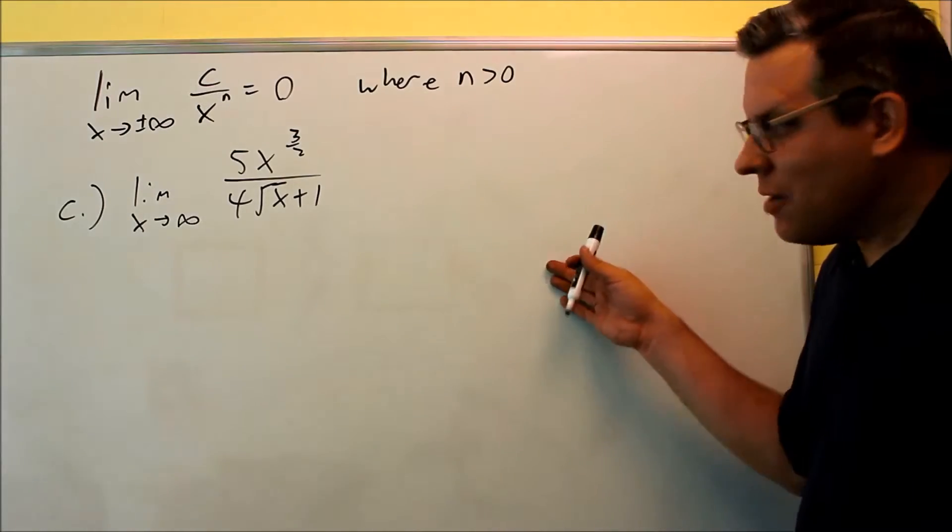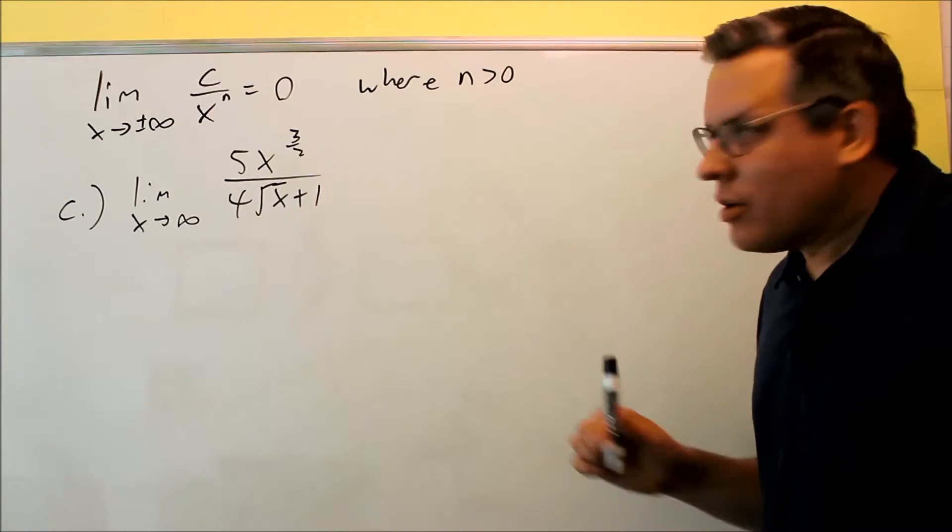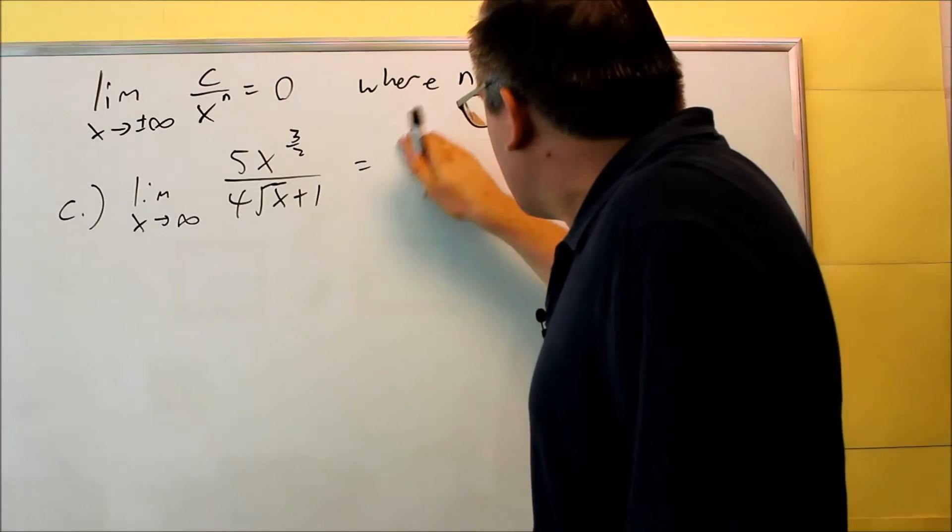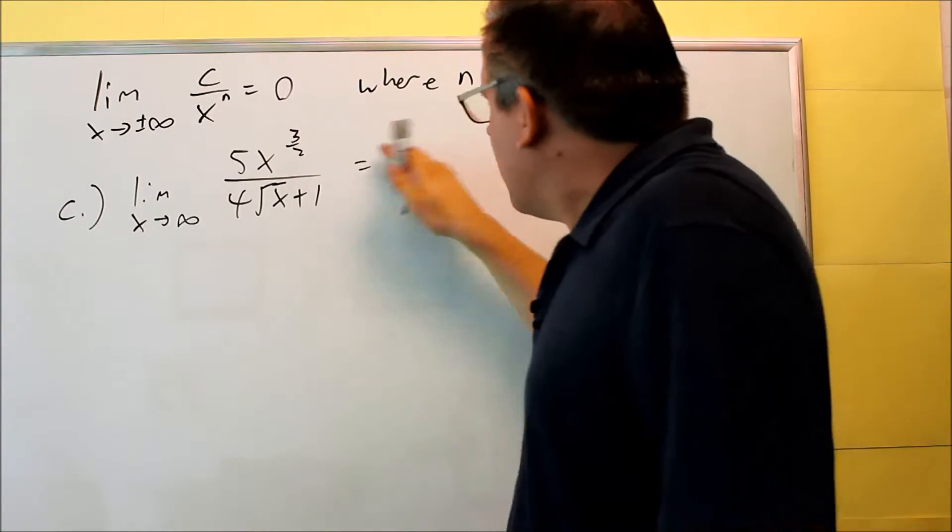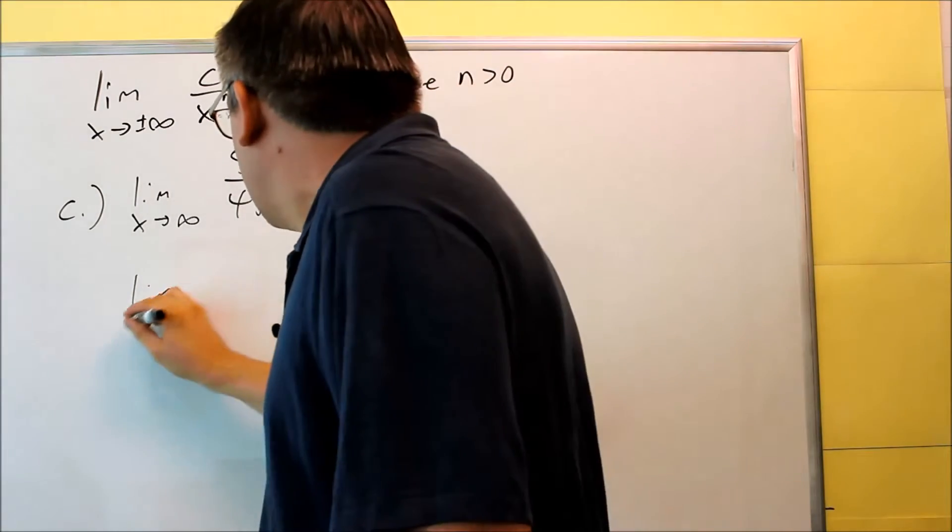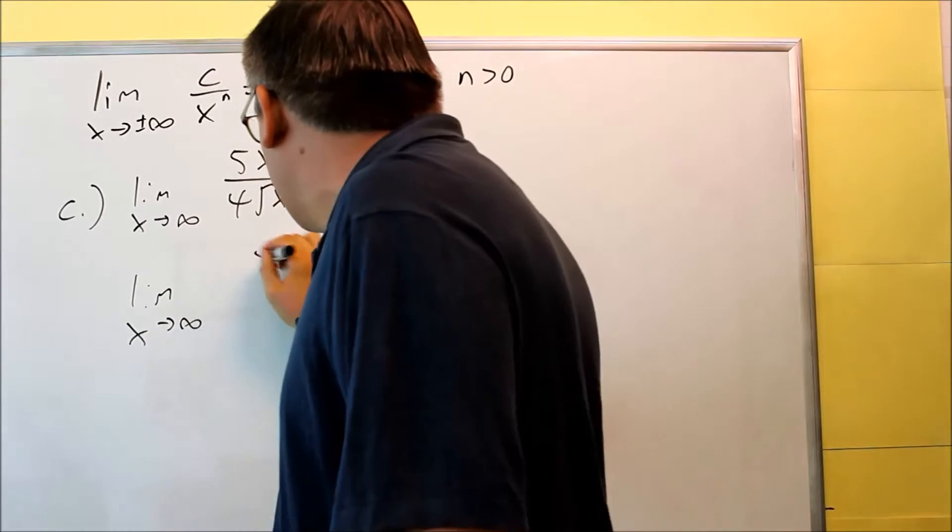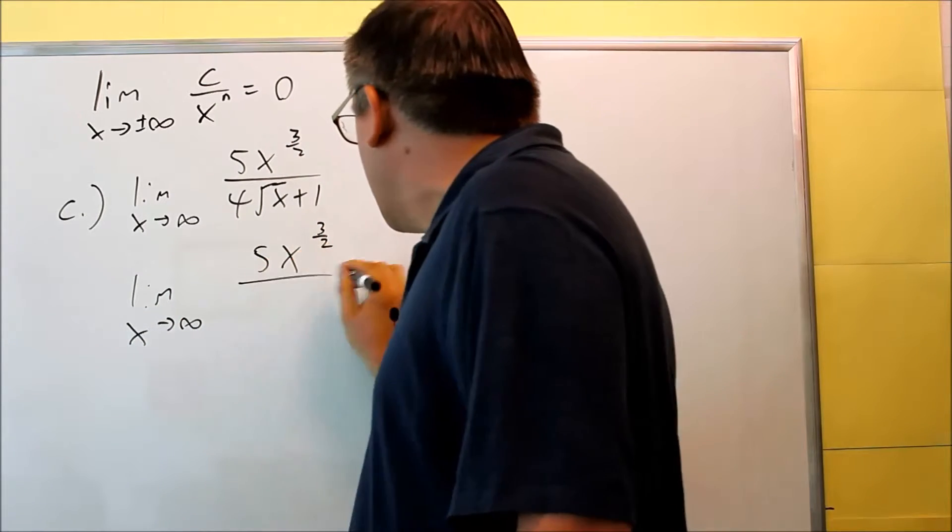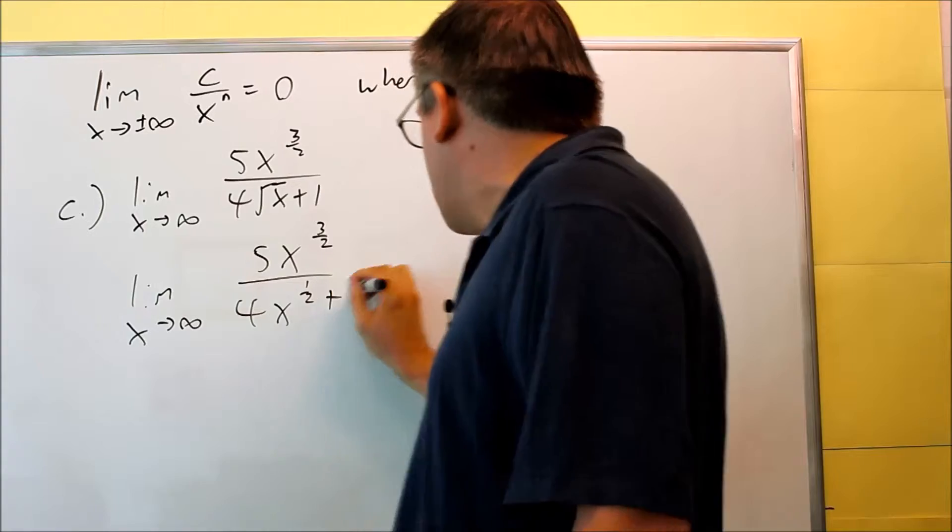And for part c, we have a radical that's here. First thing what I'll do is I'm going to change it into a 1 half power. I'll do that down here, so 5x to the 3 halves over 4x to the 1 half plus 1.